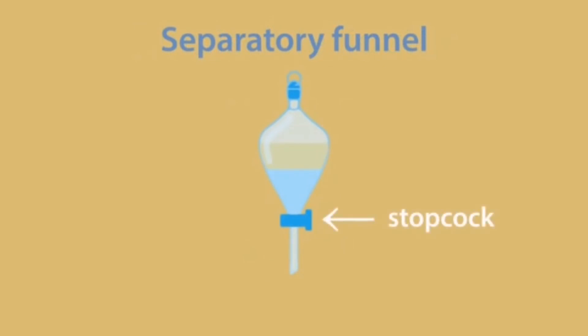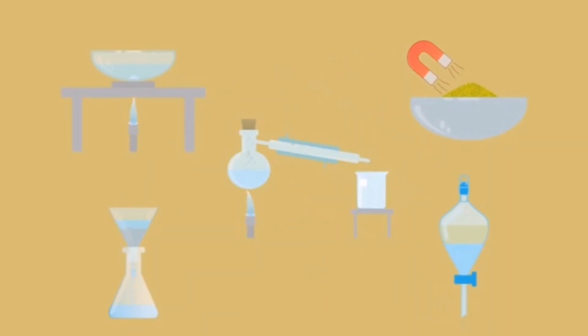This is an apparatus with a stopcock at the bottom. Releasing the stopcock allows the contents to flow out, and closing it stops the flow. To summarize, there are many techniques to separate mixtures, all depending on whether the mixture is homogeneous or heterogeneous.